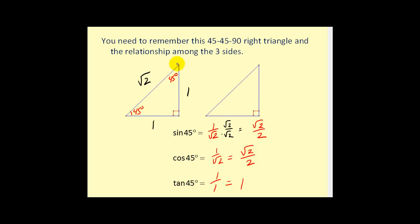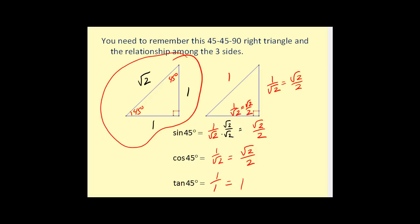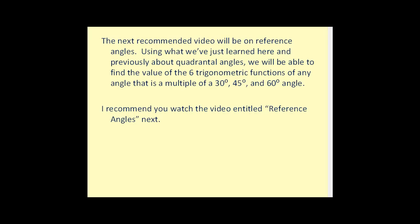If we wanted the hypotenuse to equal one, we would divide each side by the square root of two — giving sides of one over square root two, which rationalizes to square root of two over two in both cases. But the version you really want to remember is the one with sides one, one, and square root of two. The next recommended video will be on reference angles. Using what we've learned here about these special triangles and quadrantal angles, we will be able to find the values of the six trigonometric functions of any angle that is a multiple of 30, 45, and 60 degrees. Thank you for watching.